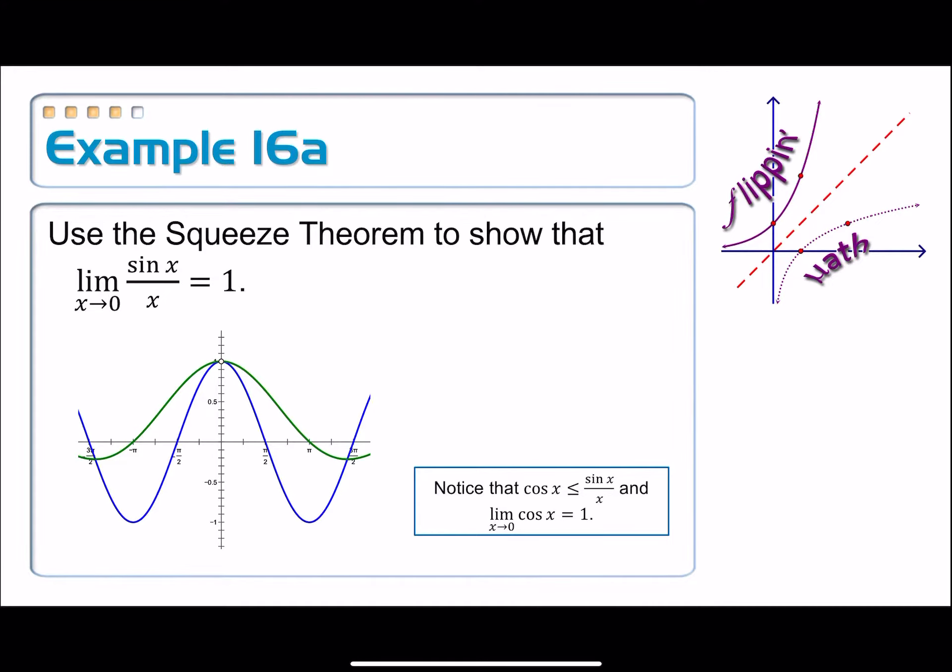So notice that cosine of x is less than or equal to sine x over x. Well, first of all, that's part of the inequality that we wanted to establish, but notice it's not true everywhere. Look, it hits right here, and then it switches. Now the blue one's on top. And remember, that doesn't matter as long as we can find an interval over which our inequality is true, and we can.